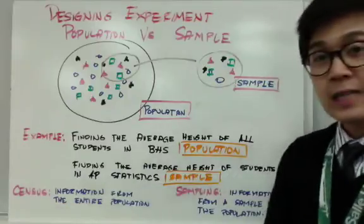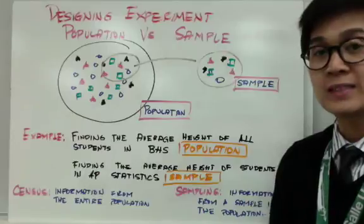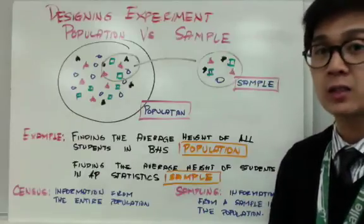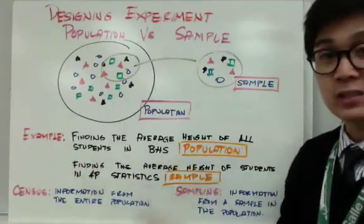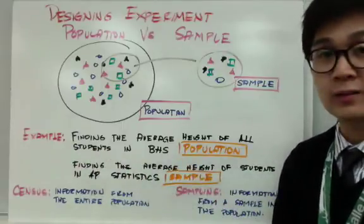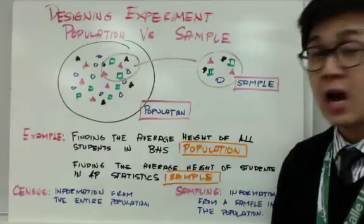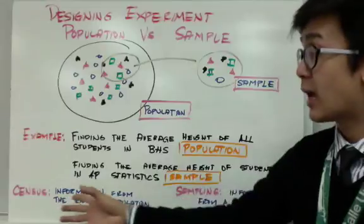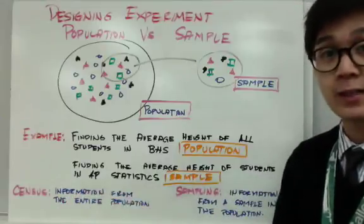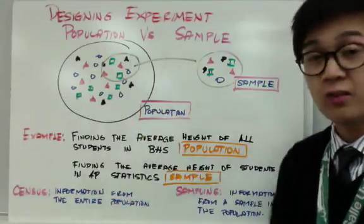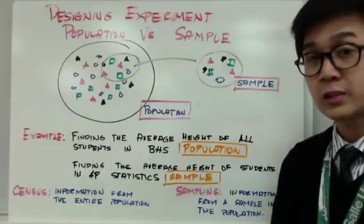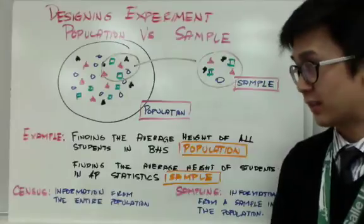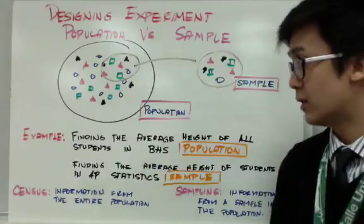Census is the term we use when we attempt to find information from the population. The first example is already a census because I'm finding the average height of all the students in Barstow High School. The operative word is 'all' — I use all the students.